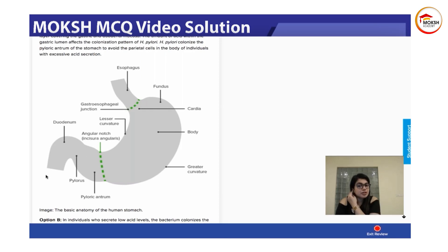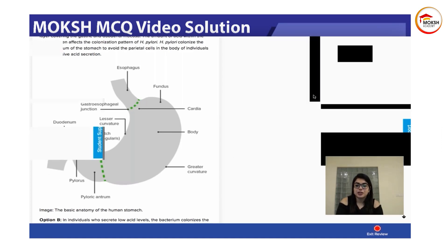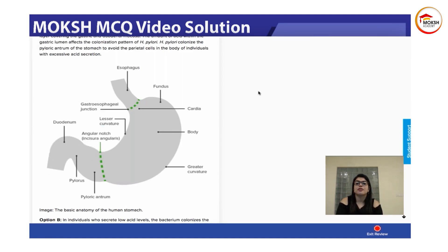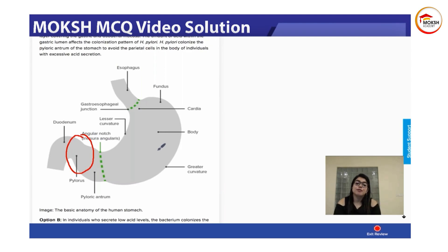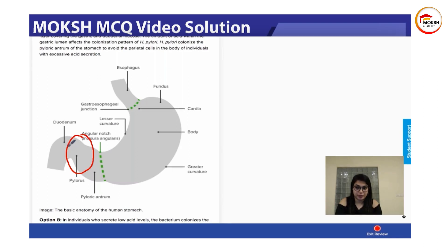In this patient, it was a classic presentation of H. pylori. Whenever patients have H. pylori infection, this is the area where H. pylori resides — the pyloric part. Hence, the most common location of gastric ulcers in H. pylori would be the pyloric region.